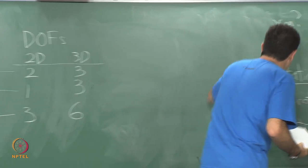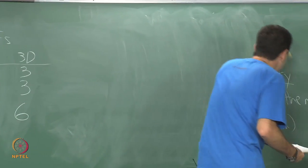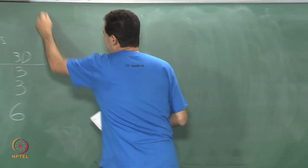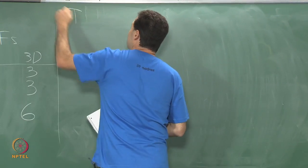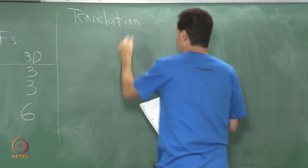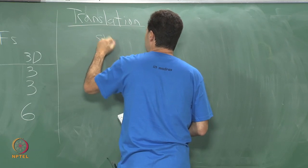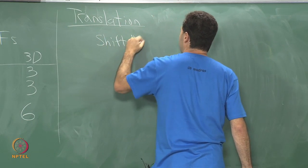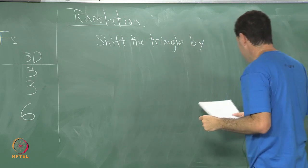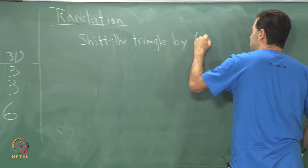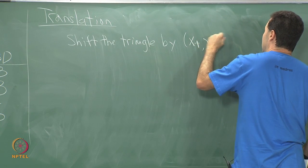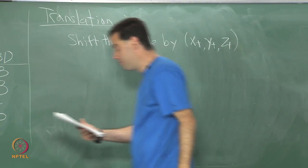Let us start off with the very easy case just for completeness and consistency, even though this one should be so simple that you might be a bit bored. Translation: suppose we just want to essentially shift the triangle by some amount. I will write it as x sub t for translation, y sub t for translation, and z sub t for translation.